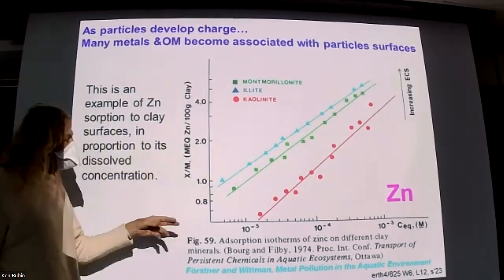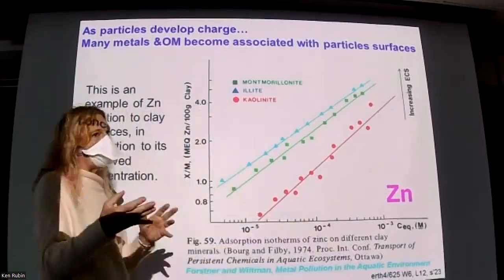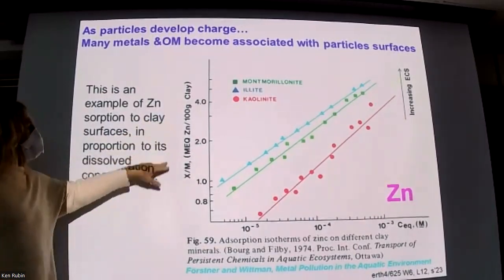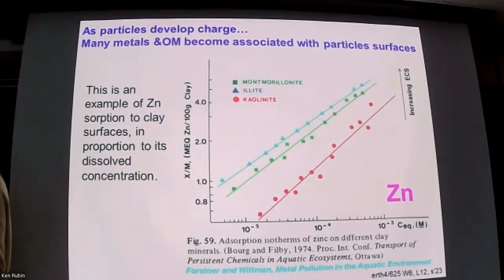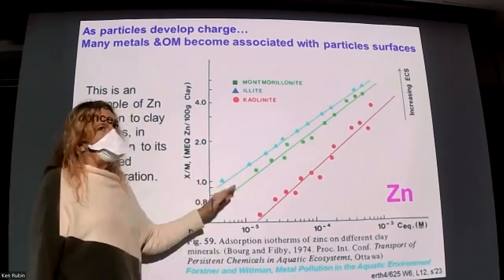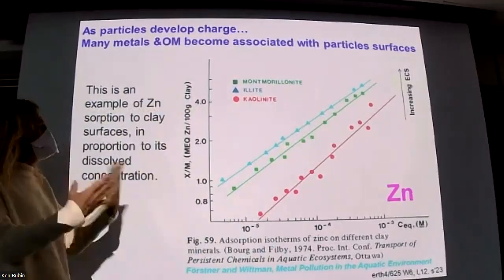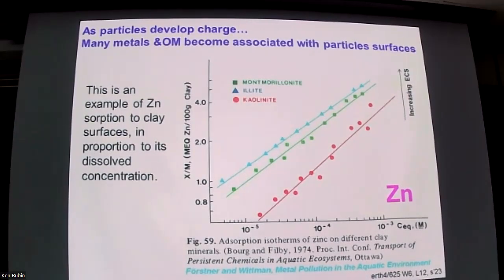Montmorillonite happened to be really high. On this plot, the x-axis is concentration in solution measured in equivalents — moles of charge — and the y-axis is concentration on the particle. There are lines for each of the three different clays and they all have a linear relationship — a linear isotherm. Over a reasonable concentration range, the more stuff in solution, the more stuff on the particle. The offset between the lines reflects the relative CEC.